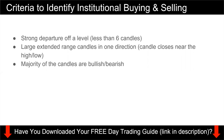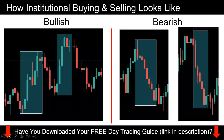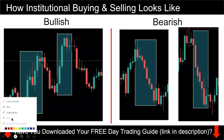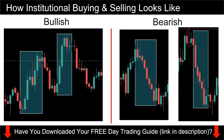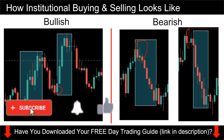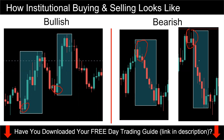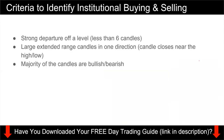Looking at the origin of the movement, there's only one candle here, about two candles here, perhaps three over here, and about two to four candles in other examples. You can see that there's a strong departure of the level and price does not stay at that level for very long — it's less than six candles. So that's the first criteria.